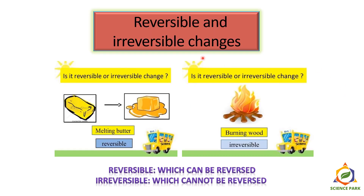Now let's see what are reversible changes and irreversible changes. Melting butter is obviously a reversible change. But burning wood — can you get the wood back after burning it into ash? No, you cannot. A reversible change is one that can be reversed, and an irreversible change is one that cannot be reversed.